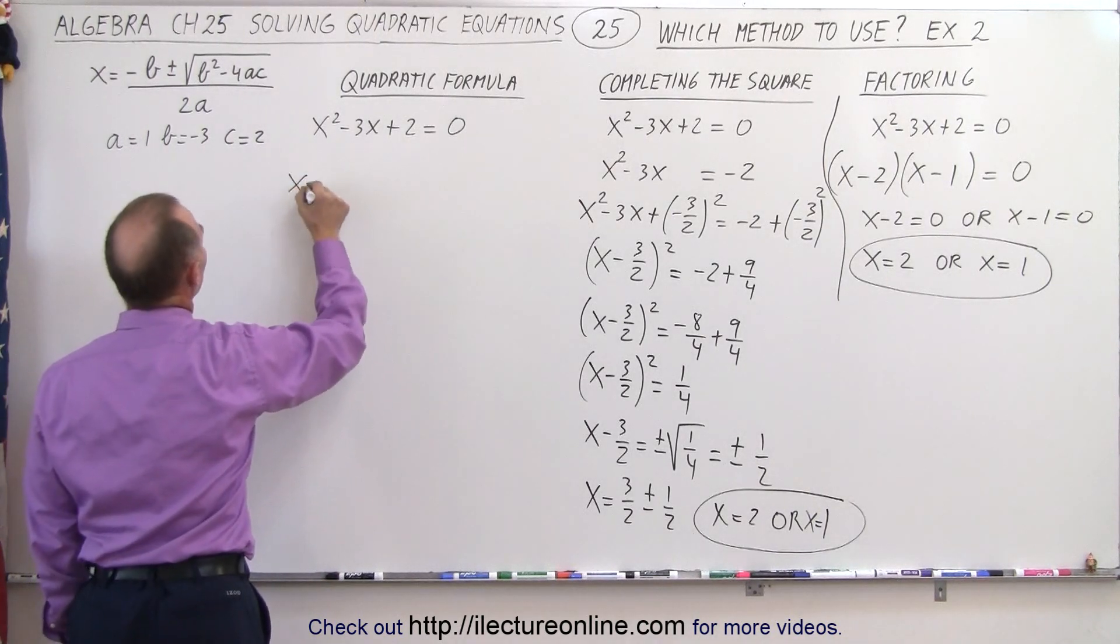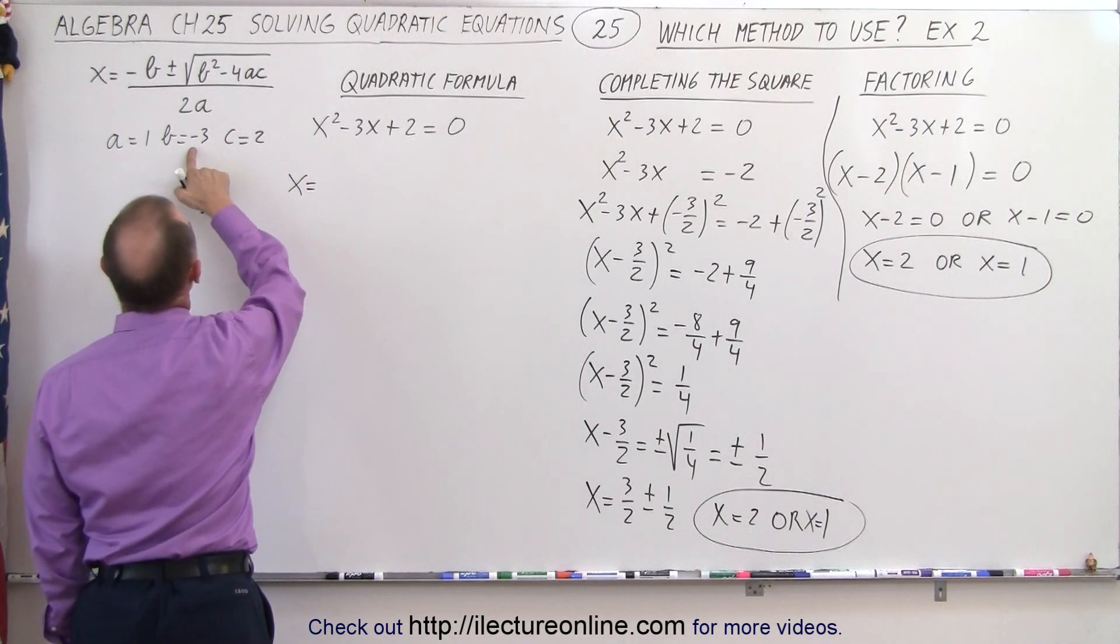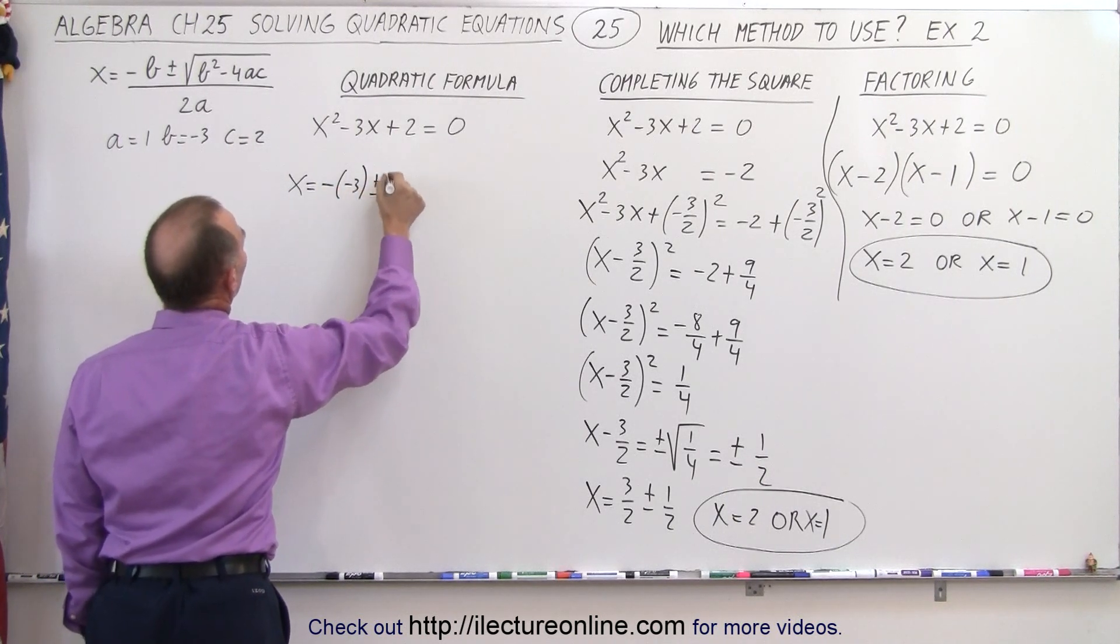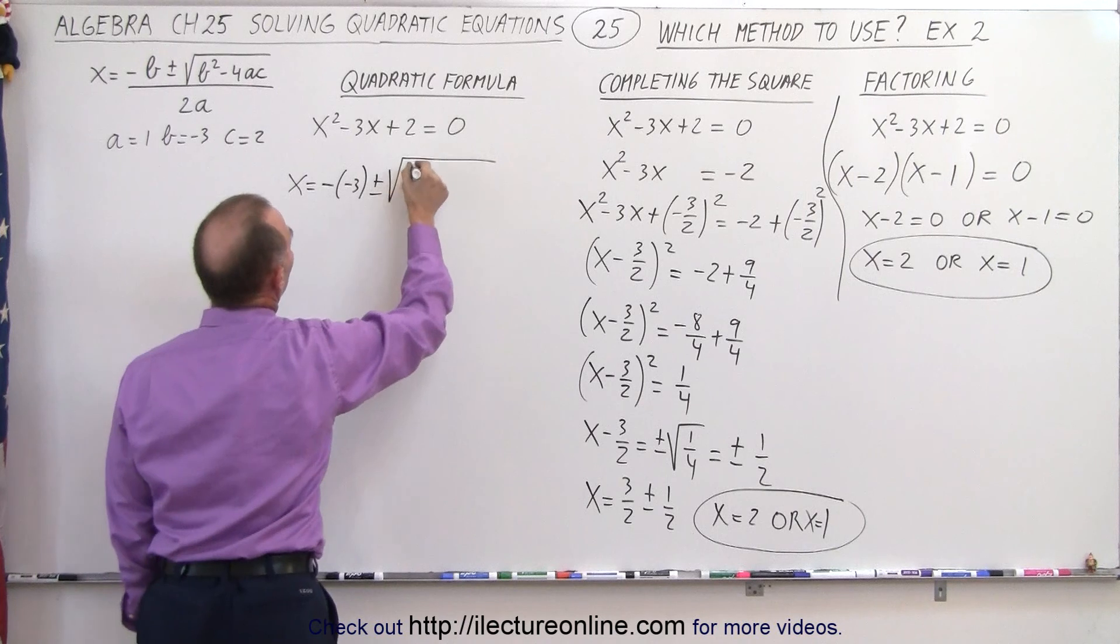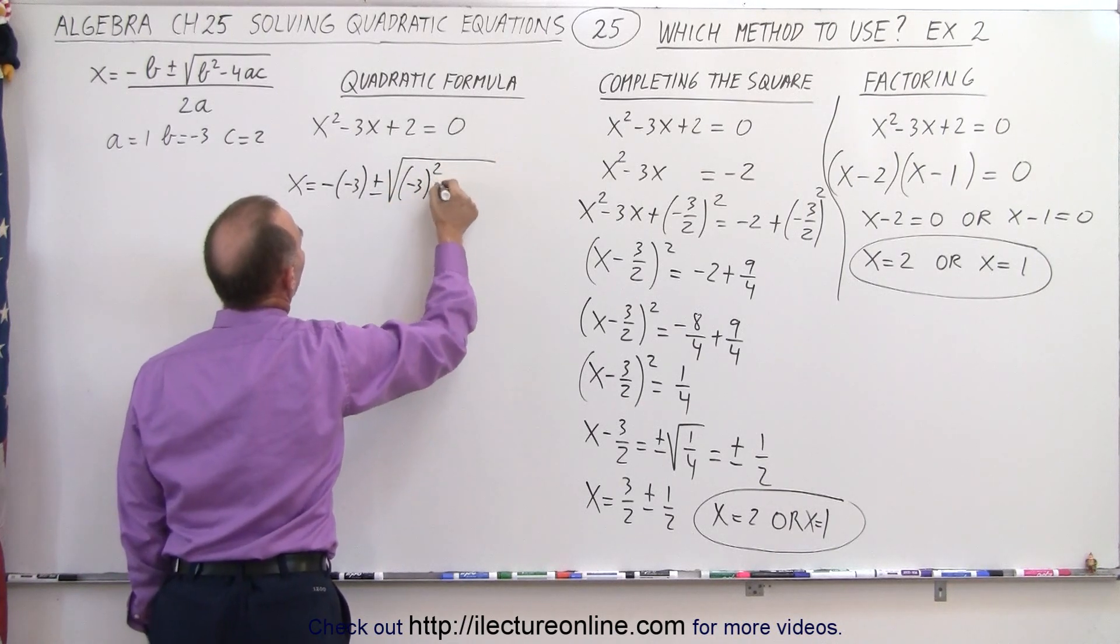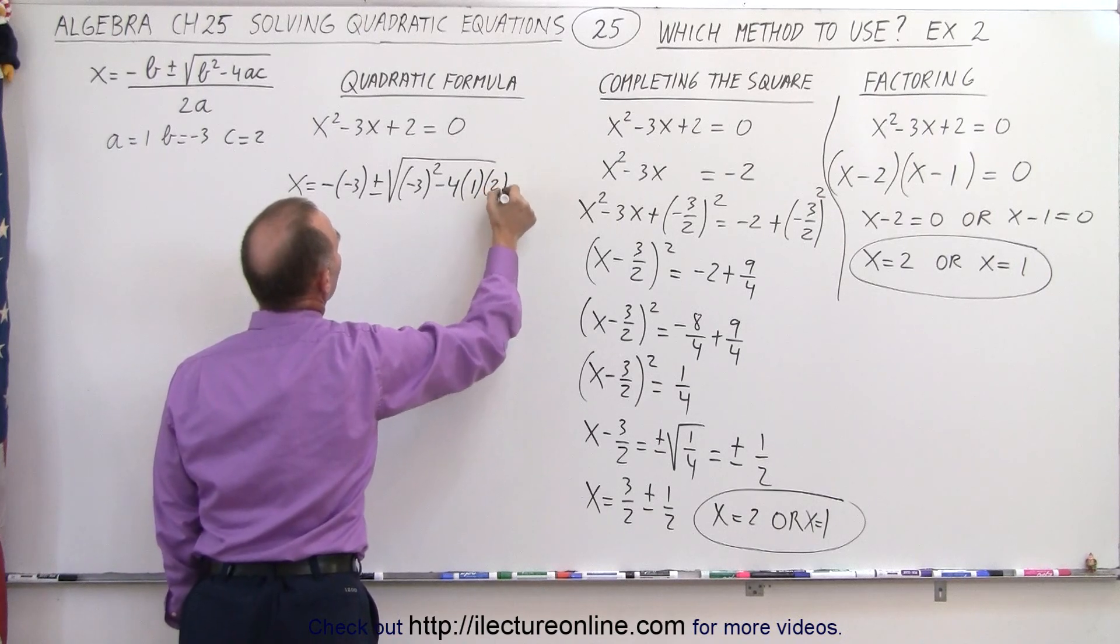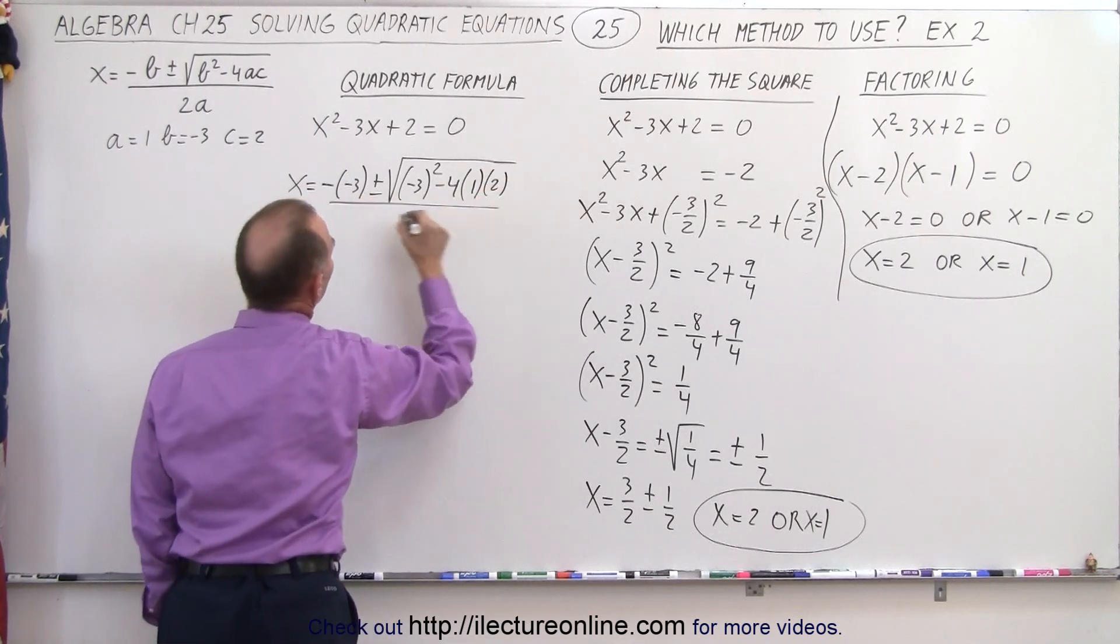So we end up with X is equal to minus B. That would be minus times the minus 3, plus or minus the square root of B squared, which is minus 3 squared, minus 4 times A times C, all divided by 2 times A.